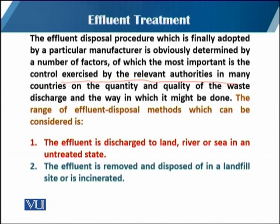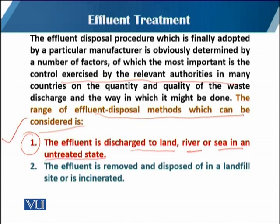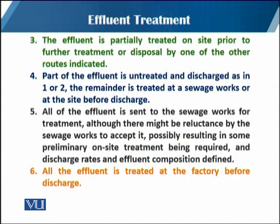As discussed in the previous module, the range of effluent disposal methods includes: number one, the effluent is discharged to land, river, or sea in an untreated state; and number two, the effluent is removed and disposed of at a landfill site or is incinerated. The third option is that the effluent is partially treated on site prior to further treatment or disposal by one of the other routes.